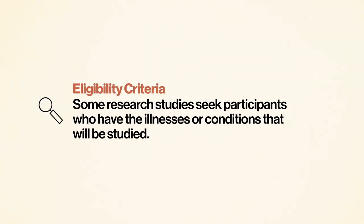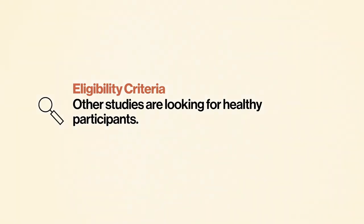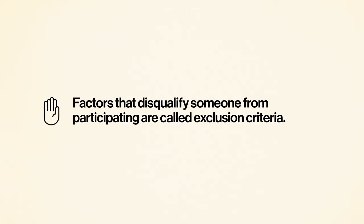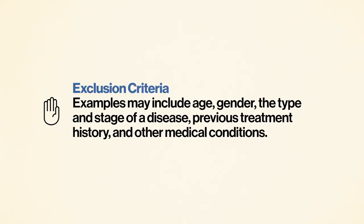Some research studies seek participants who have the illnesses or conditions that will be studied, while other studies are looking for healthy participants. Factors that disqualify someone from participating are called exclusion criteria. Characteristics such as age, gender, the type and stage of a disease, previous treatment history, and other medical conditions are examples of criteria that may be outlined in the inclusion or exclusion criteria.